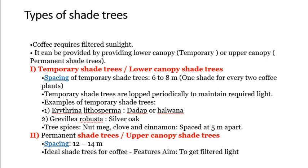Coffee requires filtered sunlight, which can be provided by a lower canopy of temporary shade trees and an upper canopy of permanent shade trees. Spacing of temporary shade trees is 6×8 meters — one shade tree for every two coffee plants. Temporary shade trees are lopped periodically to maintain required light. Examples of temporary shade trees are Erythrina, Lithosperma, and Dadaap or Halbwana. Permanent shade trees include Grevillea robusta (Silver Oak). Tree spices such as nutmeg, cloves and cinnamon can also be used, spaced at 5 meters apart. Spacing of permanent shade trees is 12 to 14 meters. Ideal shade trees should provide filtered light.